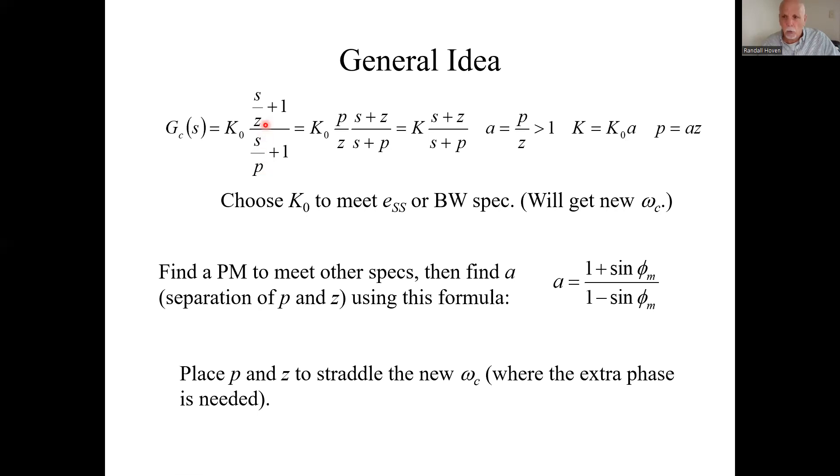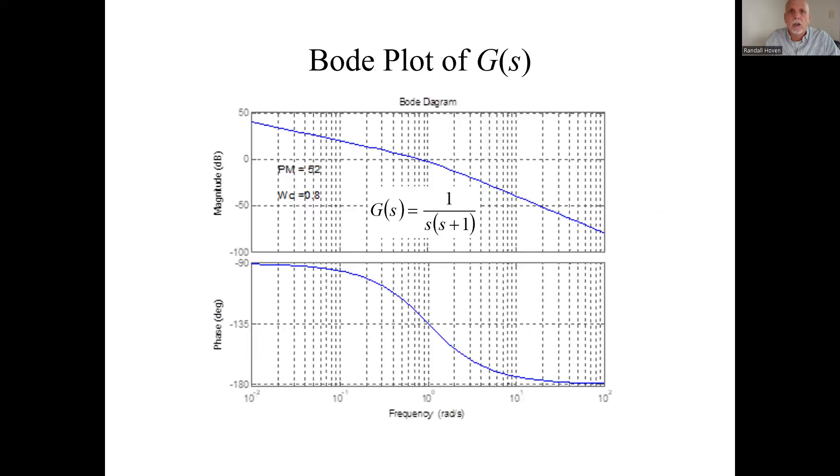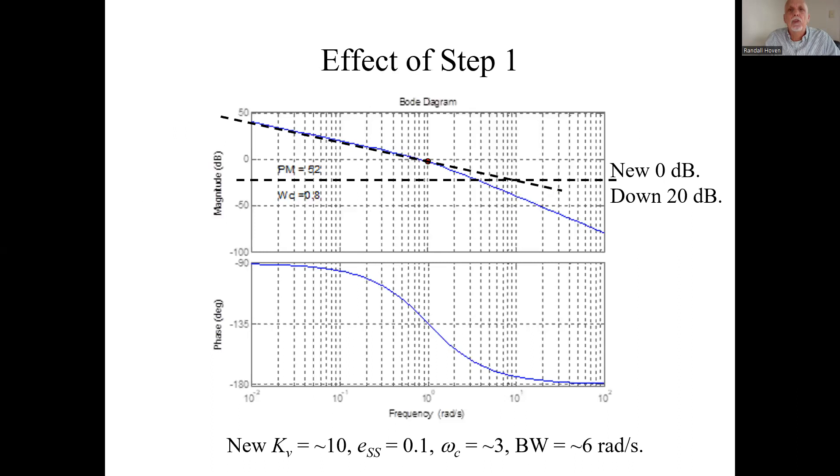And actually we weren't given the phase margin spec directly. We're given in our example a peak overshoot spec. So that's where we start step two.